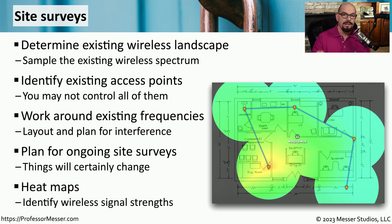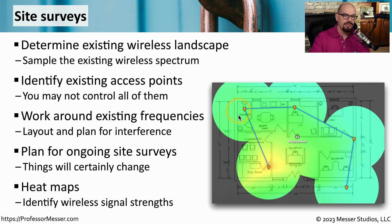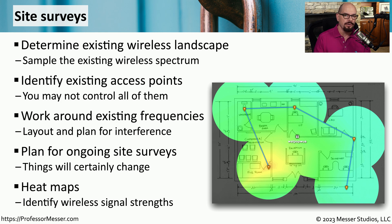A good way to visualize your wireless network is with a heat map. This is a heat map I took with my network, and you can see the areas where there's more signal have the colors yellow or red. As the signal decreases, you can see that the colors become darker or more blue. It's sometimes difficult to predict how wireless signals might work in a particular workplace. These heat maps allow you to go from room to room and get an idea of what you might expect with signal strengths on your network.